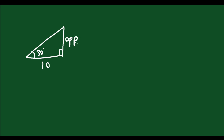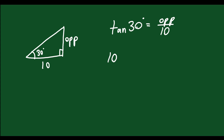Let's do another one. I have a right triangle with angle 30 degrees, adjacent side = 10, and I need to find the opposite side. Since I have adjacent and need opposite, I use tan. Tan of 30 degrees equals opposite over adjacent, so opposite over 10. Multiply both sides by 10: 10 tan 30 degrees equals the opposite. Plug that into your calculator — type in 10 tan 30 — and you get the opposite side is approximately 5.8.